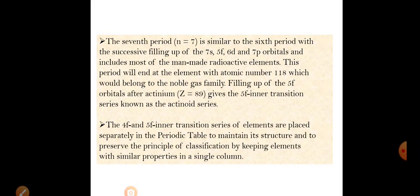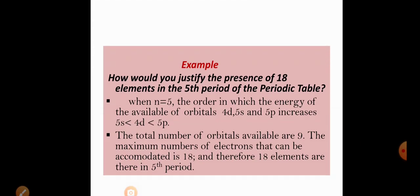The 4f and 5f inner transition series of elements are placed separately in the periodic table to maintain its structure and to preserve the principle of classification by keeping elements with similar properties in a single column. This also justifies the presence of 18 elements in the fifth period: 9 orbitals are involved, so 9 × 2 = 18 elements.